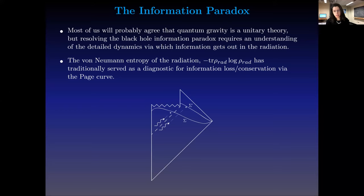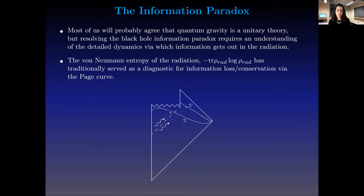Here I've drawn a picture of an asymptotically flat black hole which is evaporating — just a caricature. We have two entangled particles across the horizon, a late-time slice sigma prime, and an earlier slice before the black hole totally evaporated, sigma. The black hole information paradox is really a question about what happens when you form a black hole from a pure state: once the black hole completely evaporates, is the radiation pure? The von Neumann entropy of the radiation — minus trace rho log rho — has traditionally served as a diagnostic for information loss or conservation.